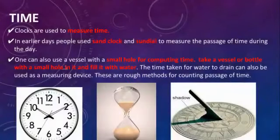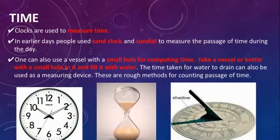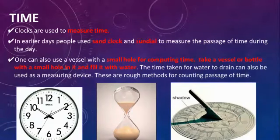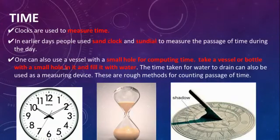Next, we move on to time. Summer changes into winter, winter to rainy — seasons change, and time passes. Clocks are used to measure time. In earlier days, people used sand clocks and sundials to measure the passage of time during the day. One can also measure time using a vessel with a small hole filled with water — the time taken for the water to drain serves as a measuring device.